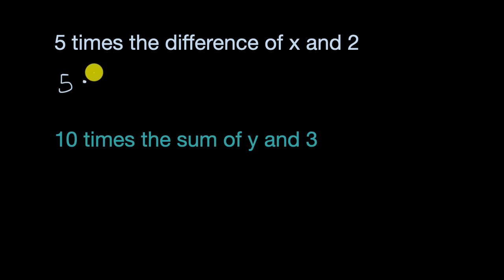because when we're dealing with algebra, if you write a traditional multiplication sign, it can get confused with an x. So five times the difference of x and two. The difference of x and two we could write as x minus two.